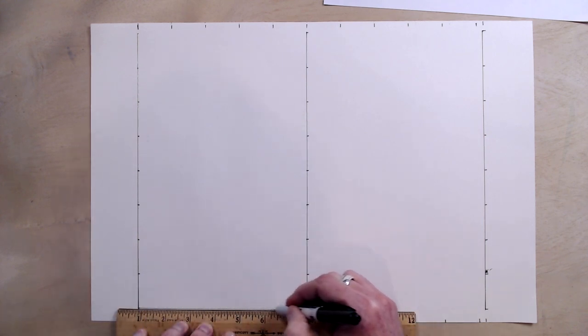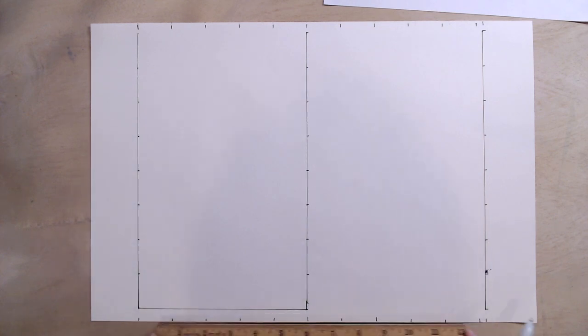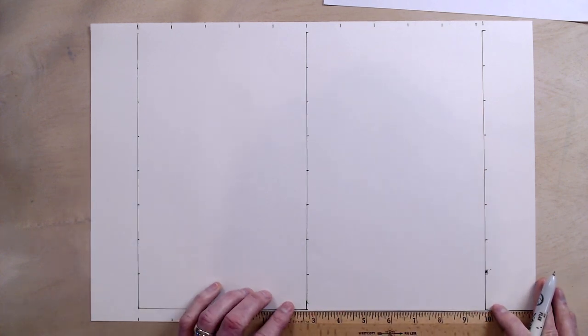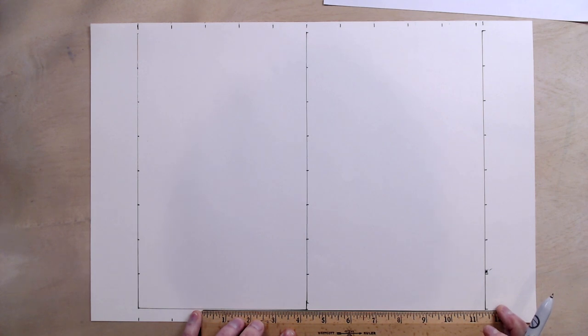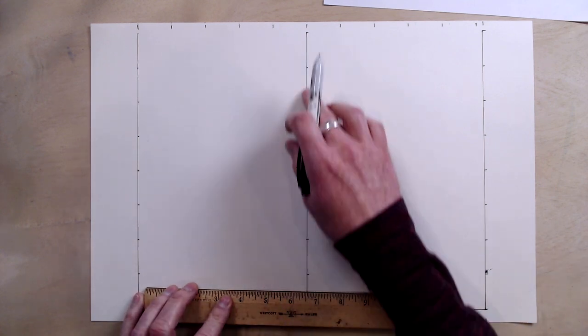So I'll go here, shift my ruler over and make sure I have a perfectly straight line. Now, if you have a ruler that is long enough, this will be much quicker for you and you won't need to do this. So, good on you if you have a ruler long enough.